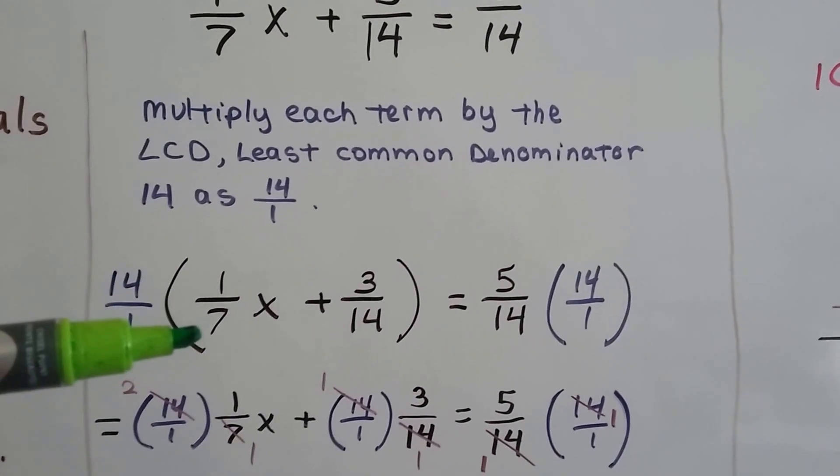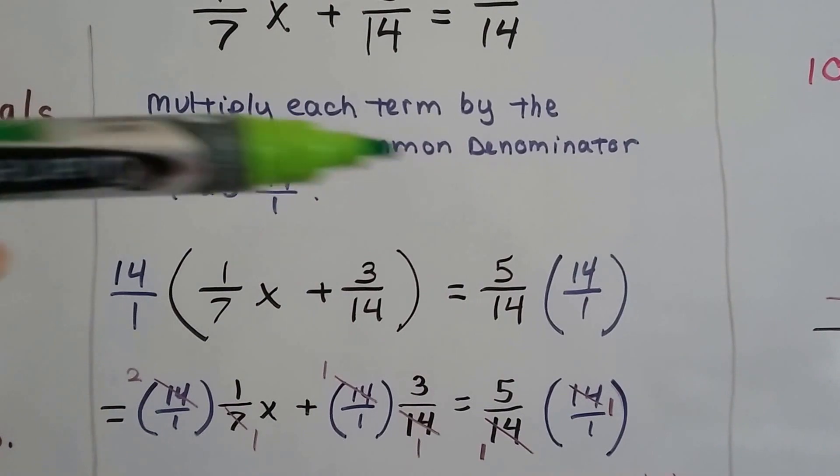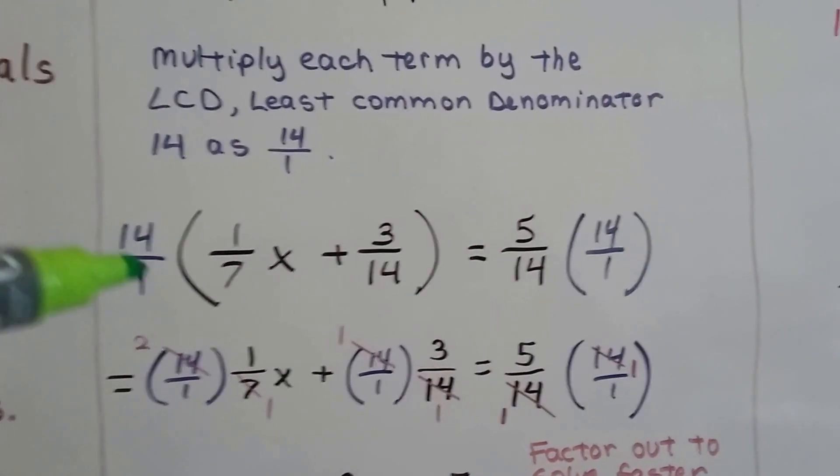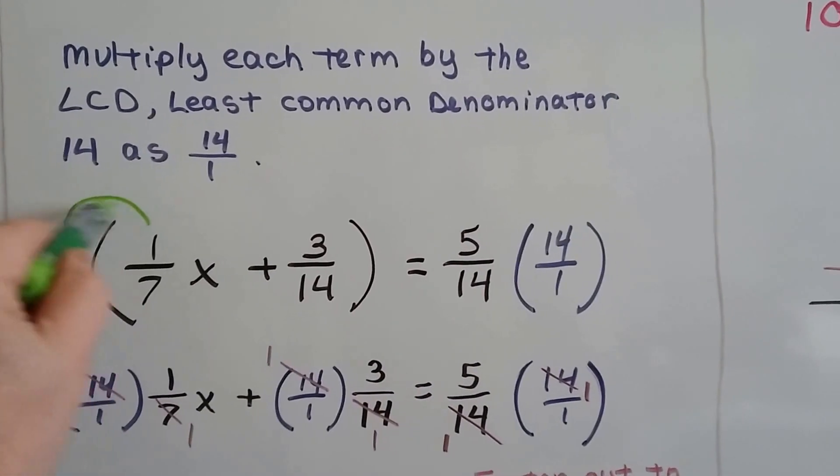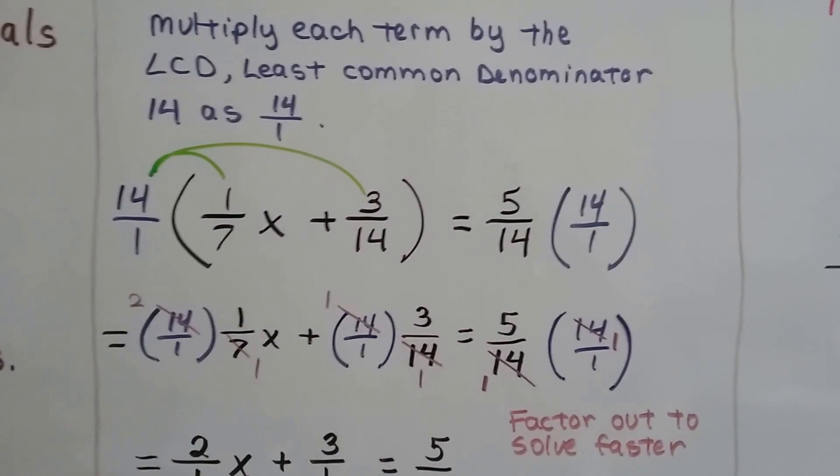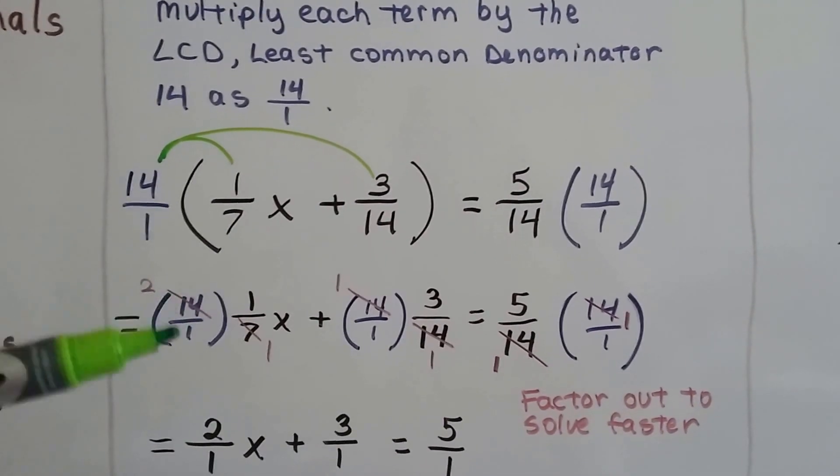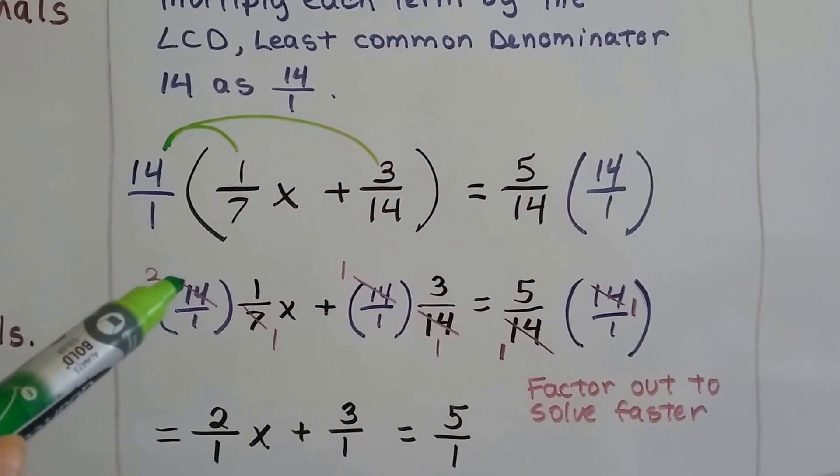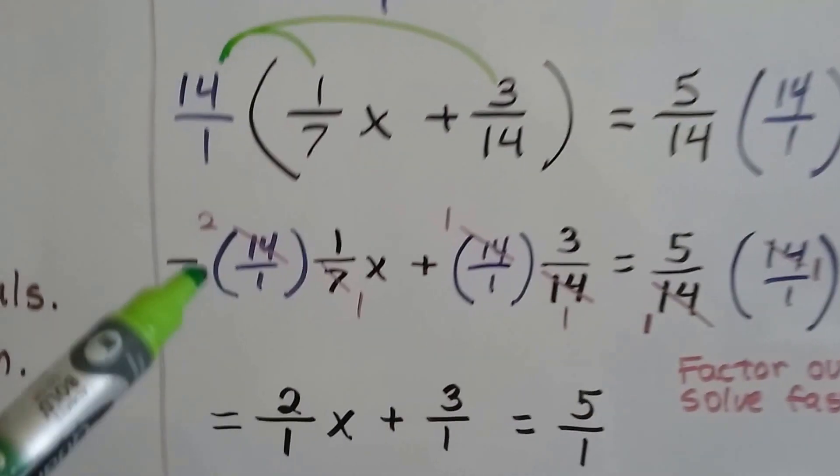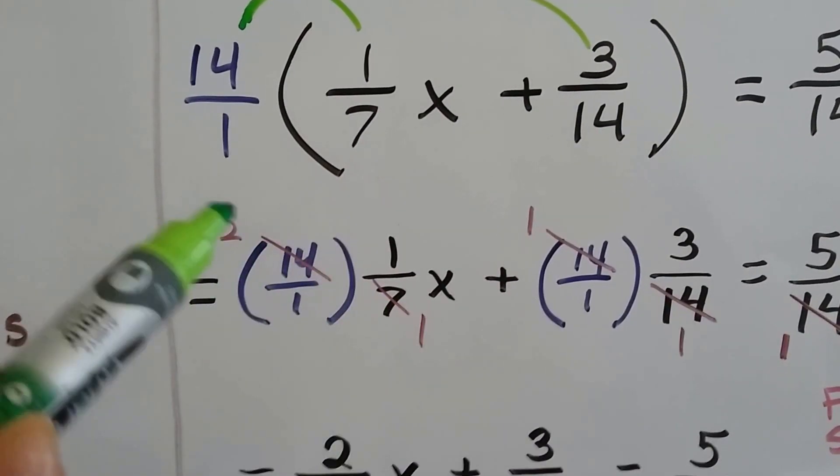We get 14/7, we get 14 times 3 over 14, and we get 5 times 14 over 14. In this case, instead of multiplying and distributing it like this, which is what we would want to do, it's a lot easier to factor out, just cancel out. If we assign this 14 over 1 to each term, we can cancel out. This 14 is 2 sevens, and that's 1 seven, and we cancel them out as a 2 and a 1. Now we have 2 over 1.